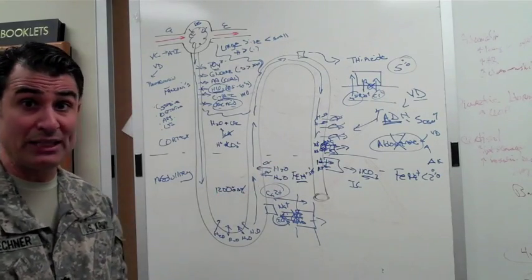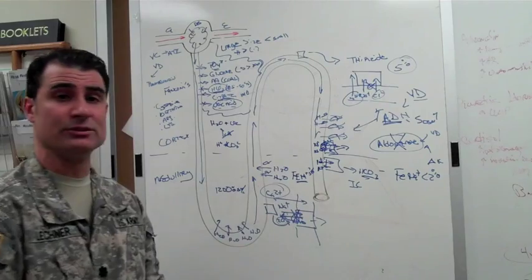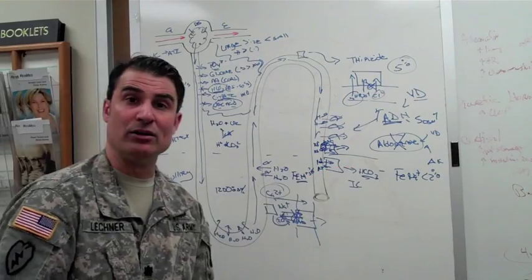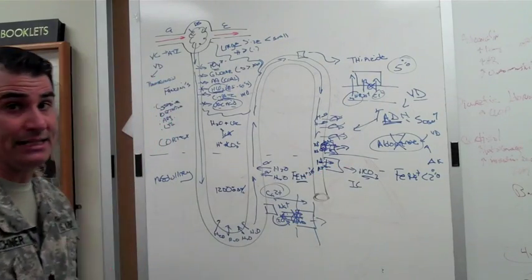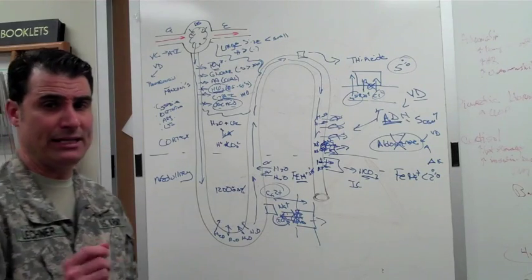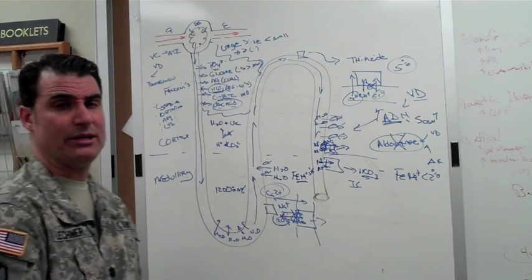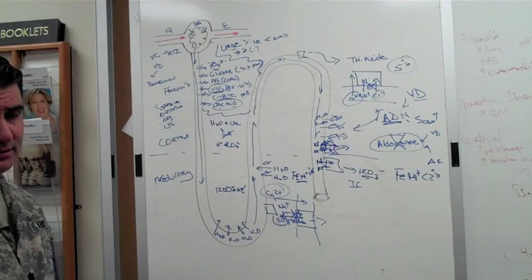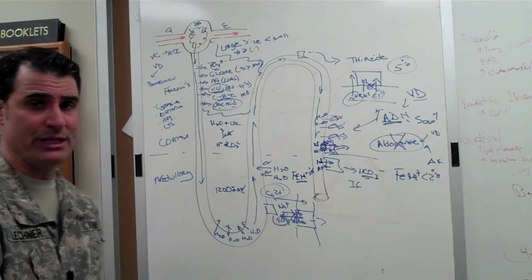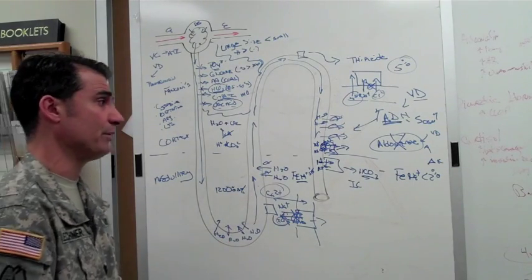Aldosterone's released because you're volume depleted and it reabsorbs sodium in the distal tubule. It also responds to a change in K, so if there's a high rate of K flux into the serum in order to prevent arrhythmias, aldosterone's going to be released to help you get rid of that.